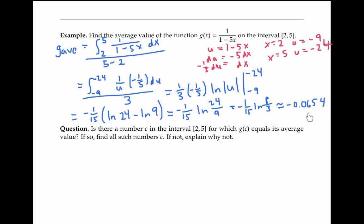So I've found the average value of g. My next question is: does g ever achieve that average value? In other words, is there a number c in the interval from two to five for which g(c) equals its average value? One way to find out is to set g(c) equal to g's average value — that is, set one over one minus five c equal to negative one fifteenth times ln(8/3) — and try to solve for c.